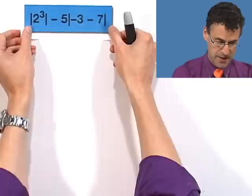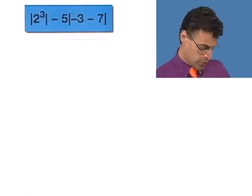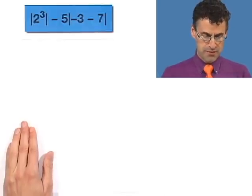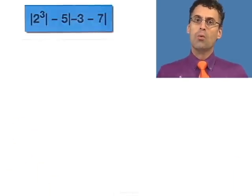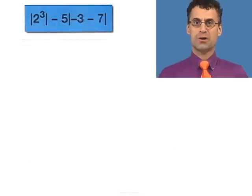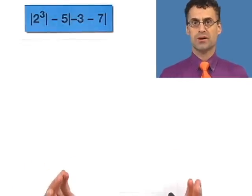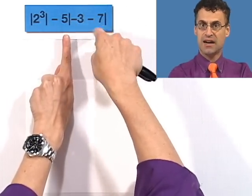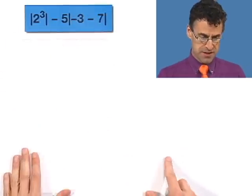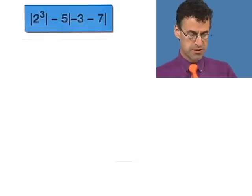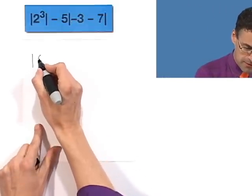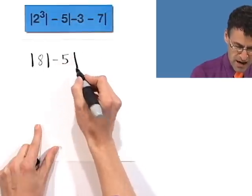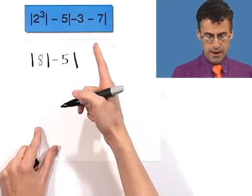So first I just want to simplify some stuff. Here's an interesting quantity: the absolute value of 2 cubed minus 5 times the absolute value of negative 3 minus 7. In this kind of context, absolute values are kind of like parentheses — very vertical parentheses — which means you have to do the action inside first. So 2 cubed is 8, so we want the absolute value of 8. Minus 5 times the absolute value of negative 3 minus 7.